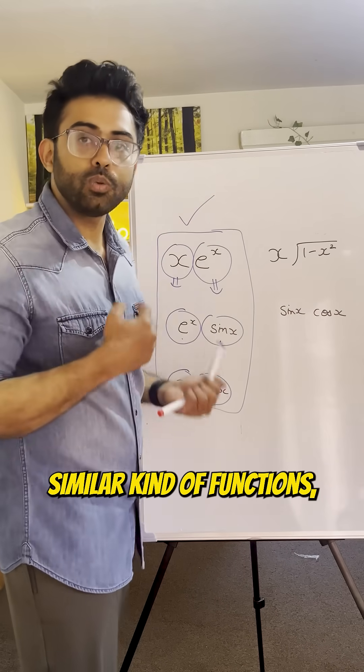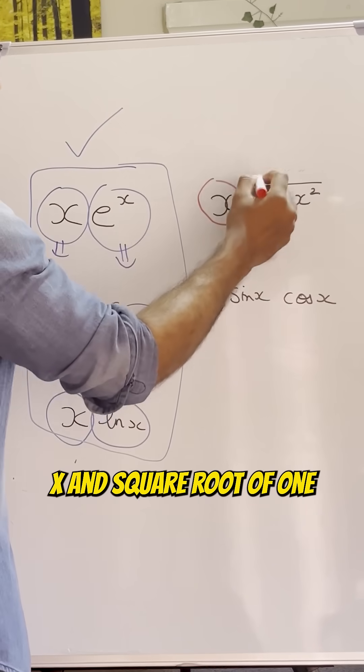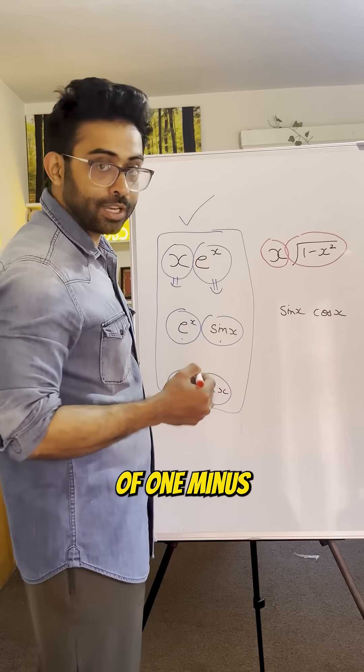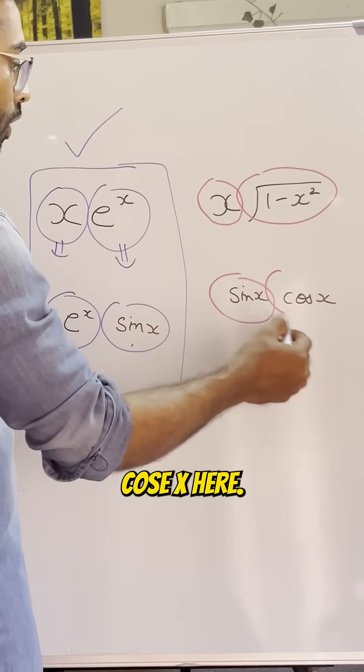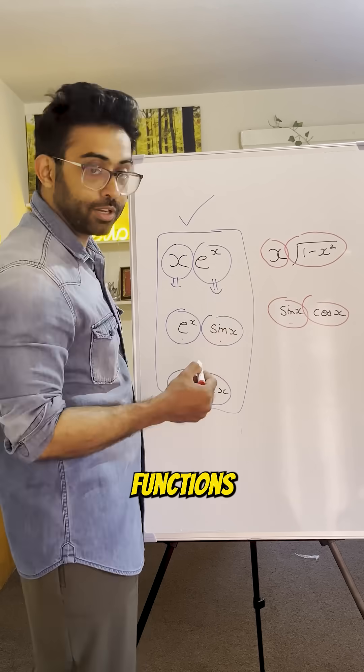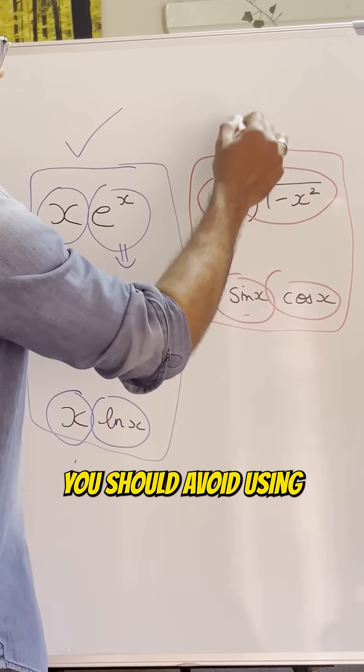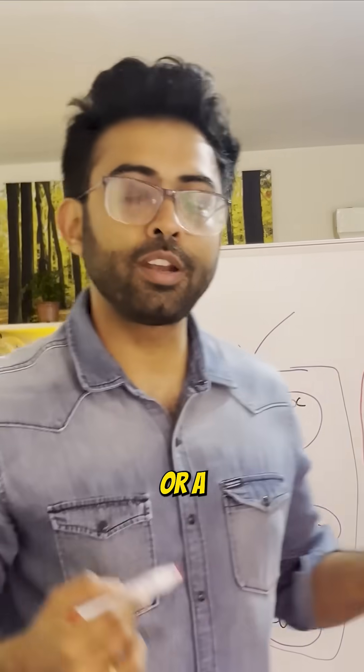Whereas if you are integrating two similar kinds of functions, something like x and square root of 1 minus x squared, where both are algebraic functions, or sin x times cos x, where both are trigonometric functions, in all these questions you should avoid using integration by parts and try to use substitution or a trigonometric identity.